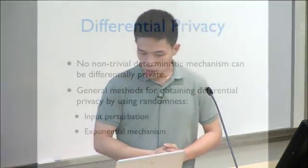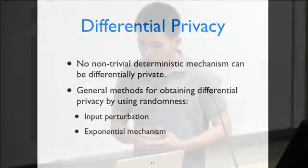I'll spend a couple more slides on intuition about differential privacy and general ways of achieving it. It's not difficult to see that no non-trivial deterministic mechanism can be differentially private, because any event chosen with probability zero at one particular input must remain zero for all inputs. So the best we can do is pick a fixed outcome regardless of input — meaning we must use randomness.